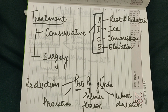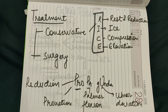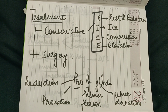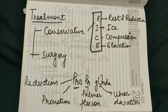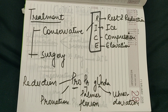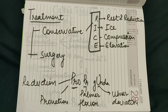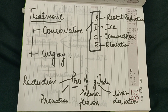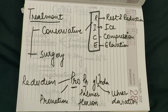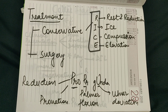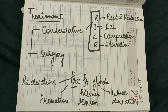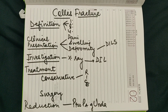In both surgery and conservative management we do reduction, and for that there is the mnemonic 'propaganda'. See how it is written: PRO-PA-small g-U-NDA. PRO stands for pronation, PA for palmar traction, and U stands for ulnar deviation.